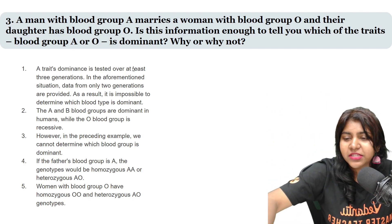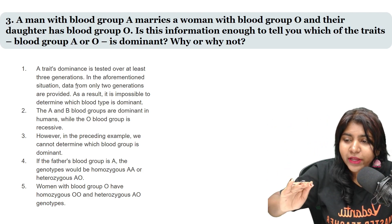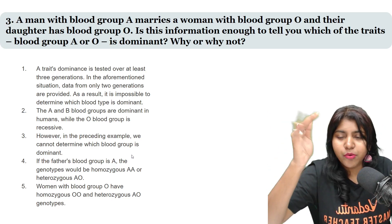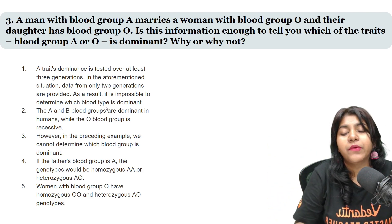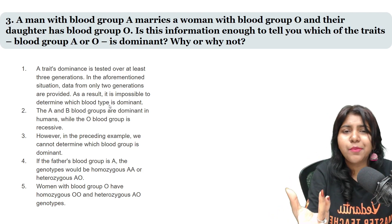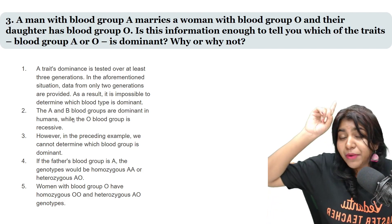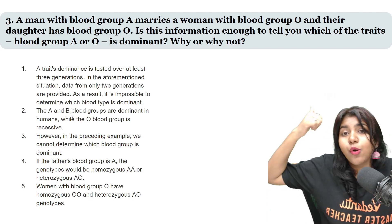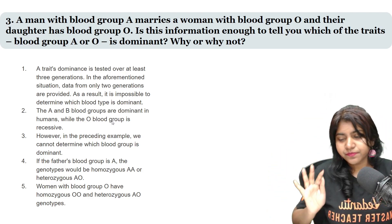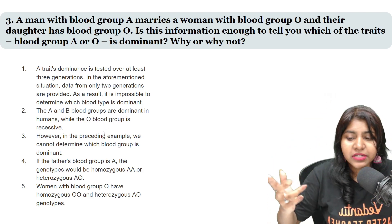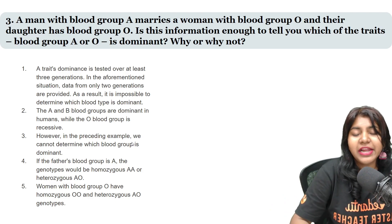Dominance is tested over at least three generations. In the above mentioned situation, it is impossible to determine which blood group is dominant from just this information alone. At least three generations are needed to determine dominance. In reality, A and B blood groups are dominant in humans, and O blood group is recessive. So from only one generation, we cannot determine dominance.